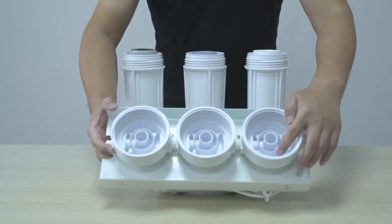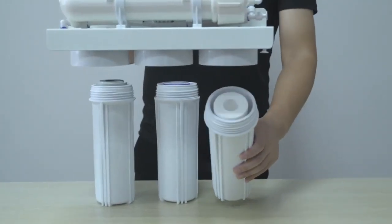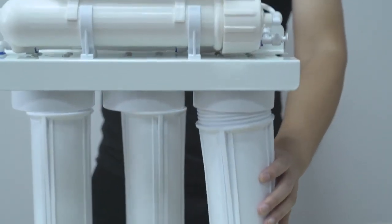Once all filter bowls are in place, tighten all three against the filter head using the filter bowl wrench.